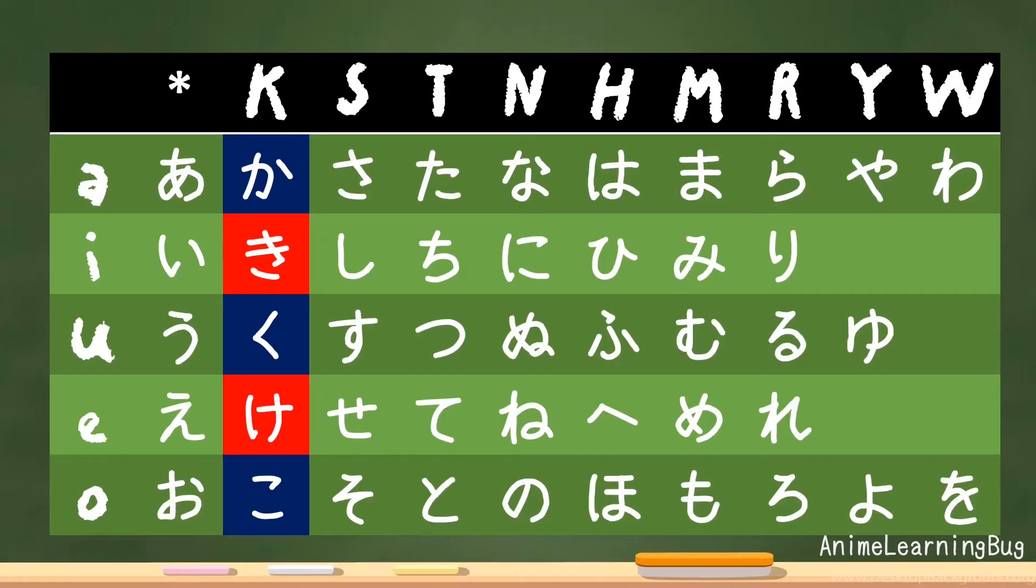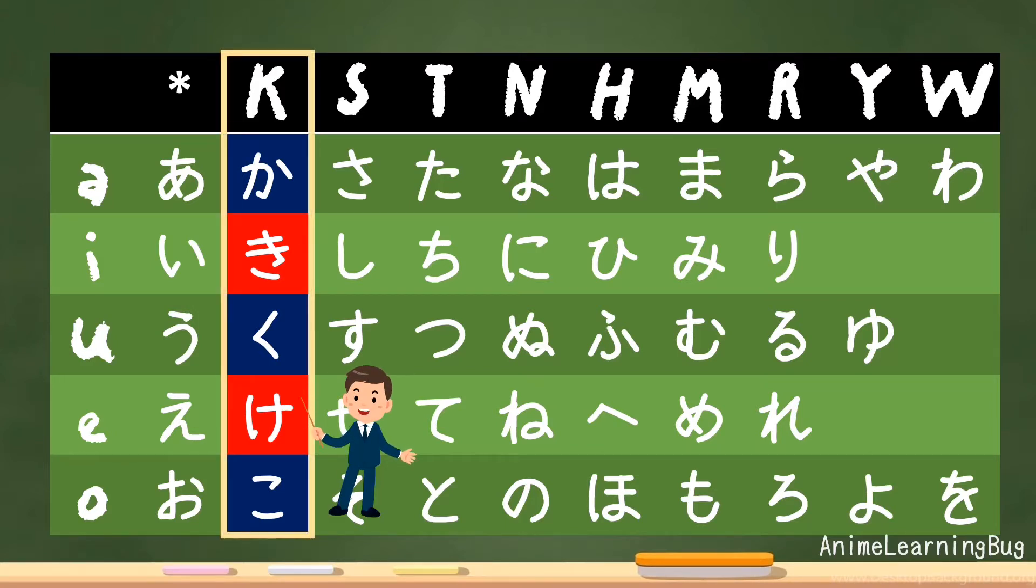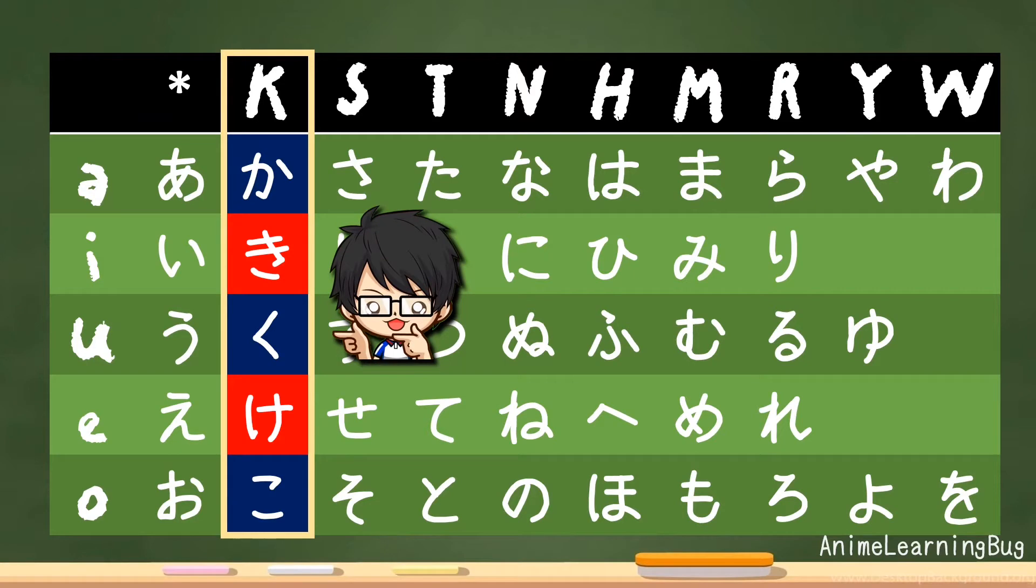Last time, we focused on the direct translation of A, I, U, E, and O. And for now, on this Hiragana chart, we are going to focus on the line of K, which is the combination of K and the vowels. ka, ki, ku, ke, and ko.